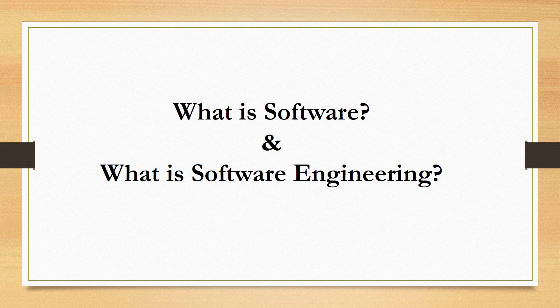Before understanding the actual software development process, we need to understand what software and software engineering are. Software is a collection of multiple programs which help us to complete a particular task. There are two types of software: system software and application software. System software controls the system and integrates with hardware components — for example, the operating system, which can manage the software running over it and collaborate with hardware components.